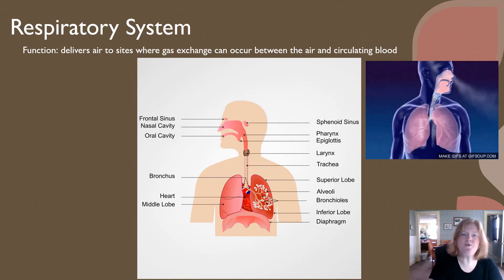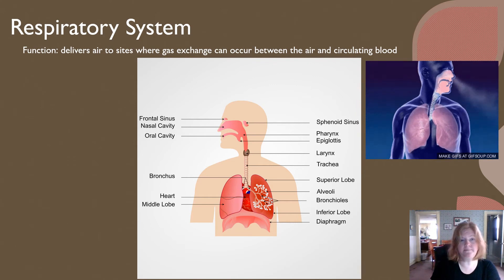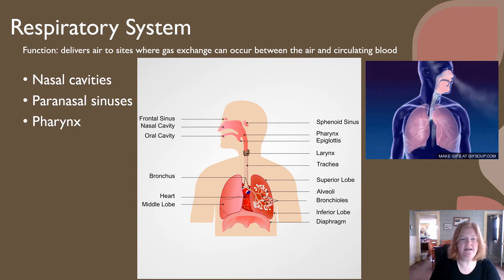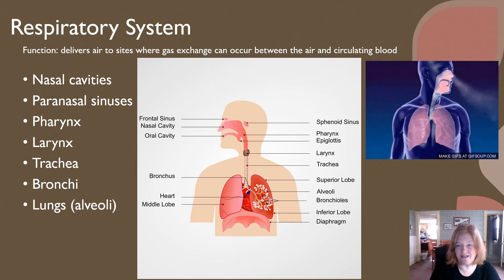The respiratory system functions to deliver air to sites where gas exchange can occur between the air and the circulating blood. It includes your nasal cavities, paranasal sinuses, the pharynx and larynx, as well as the trachea, bronchi, and the lungs, which are broken down into the functional unit — the alveoli.